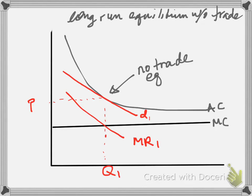Let's take a look at the model of monopolistic competition when we apply it to trade. In the model of monopolistic competition, we have an industry, and we represent that industry by looking at one firm in the industry. We assume that the firms are basically all the same, except that they're selling differentiated products.